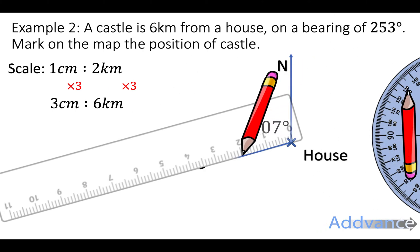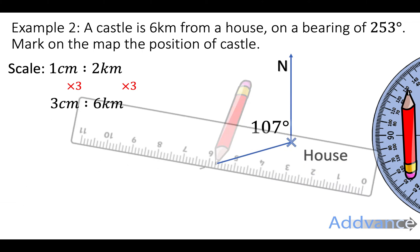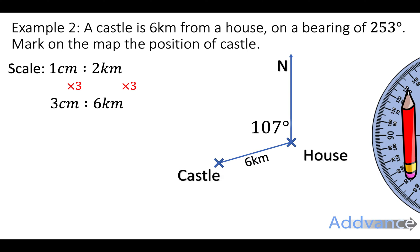So take my ruler and I draw a line that's 3 centimeters long. And therefore, I can label this point here as the castle there. And that's the position of the castle. And I'll also just label that this line is 6 kilometers long, 3 centimeters representing 6 kilometers. And that's the final answer. Remember when you do this, it has to be super accurate. So take your time when using your protractor and your ruler to get exactly the right angle and exactly the right length.